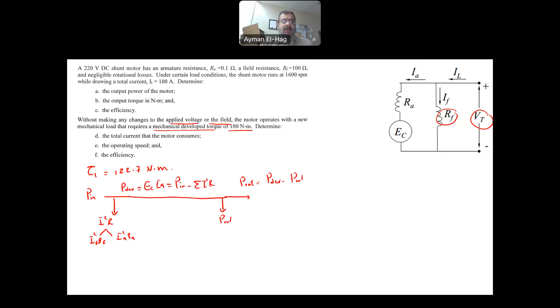But because in this question, we have negligible rotational loss, so then your Pout is equal to the P developed. So in the question, I ask you about developed torque or output torque, they exactly mean the same thing, because in that specific question, we are ignoring the rotational losses. So here, it means that your T torque number two is equal to 100 Newton meter. So at that condition, we want to find what is the total current.